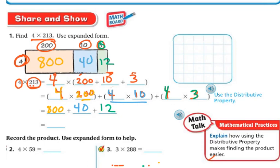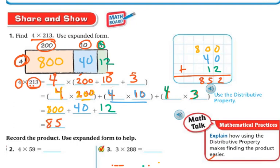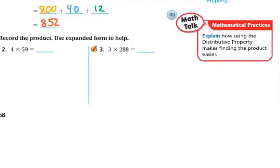Then I'm going to add up all my partial products: 800 plus 40 plus 12. 2 plus 0 plus 0 is 2, 4 plus 1 is 5, 8 plus nothing is 8. So my answer is 852.